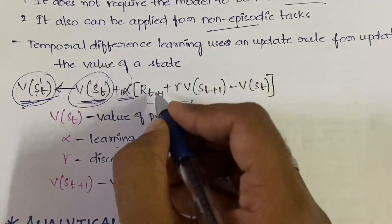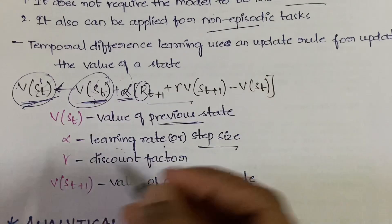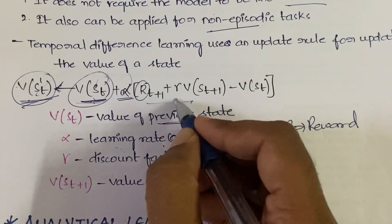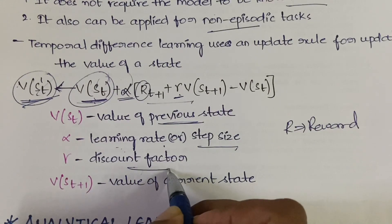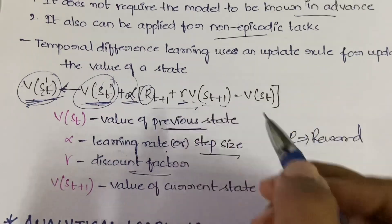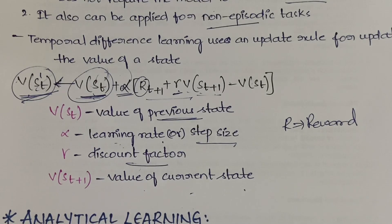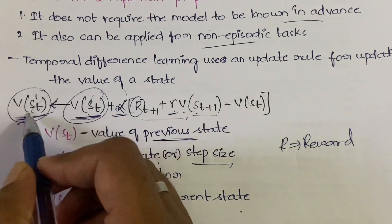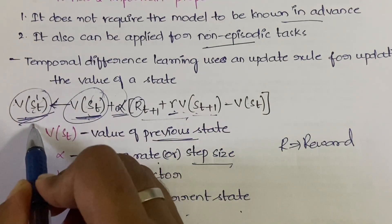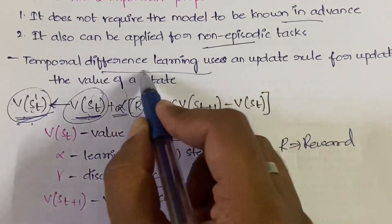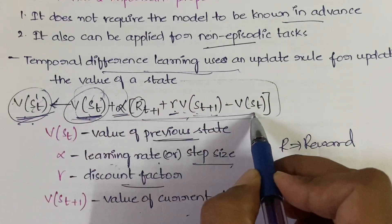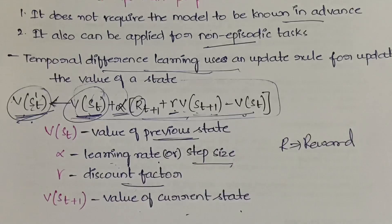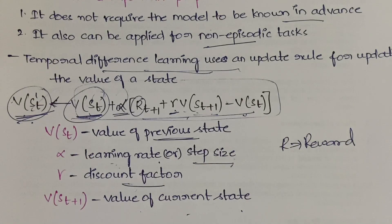Gamma is the discount factor, and V(St+1) is the value of the current state. So this is the value of the current state and this is the value of the previous state. We are going to update the value of the previous state according to temporal difference learning by using the temporal difference update rule.